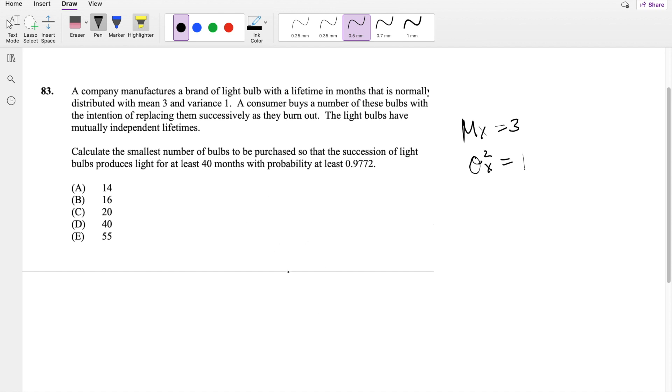And they're asking, how many light bulbs can this customer purchase such that the light bulbs produce light for at least 40 months with probability of at least 0.9772?